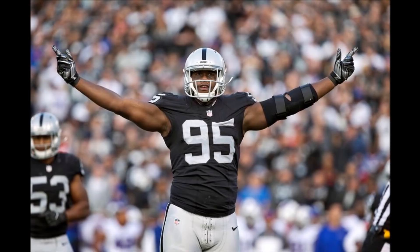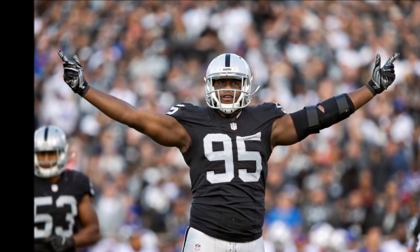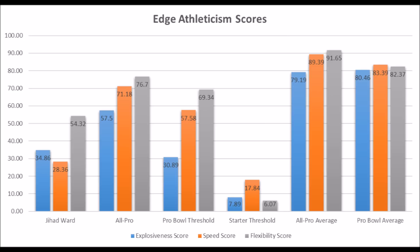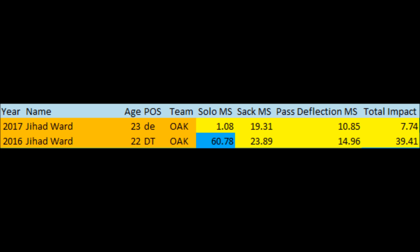Moving to the Jihad Ward trade — looking at Ward coming out of college, he had very poor production: 66.67 in solo tackle data, 28.22 in sack data, and 34.12 in tackle velocity data. He did not have all-pro potential in either production or athleticism traits. His athleticism: 34.86 in explosiveness, 28.36 in speed, and 54.32 in flexibility — more starter potential than all-pro potential, and even that is a stretch compared to league averages.